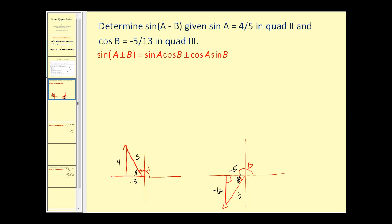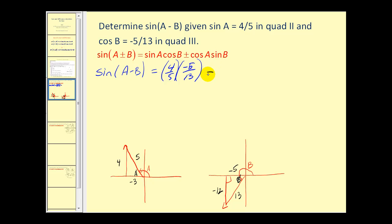Now let's go back to our identity — we should be able to find all of these values. Sine(a - b) equals sine(a) times cosine(b), which is 4/5 times -5/13, minus cosine(a) times sine(b). Cosine(a) from the reference triangle is adjacent over hypotenuse, which is -3/5. Sine(b) is opposite over hypotenuse, which is -12/13.